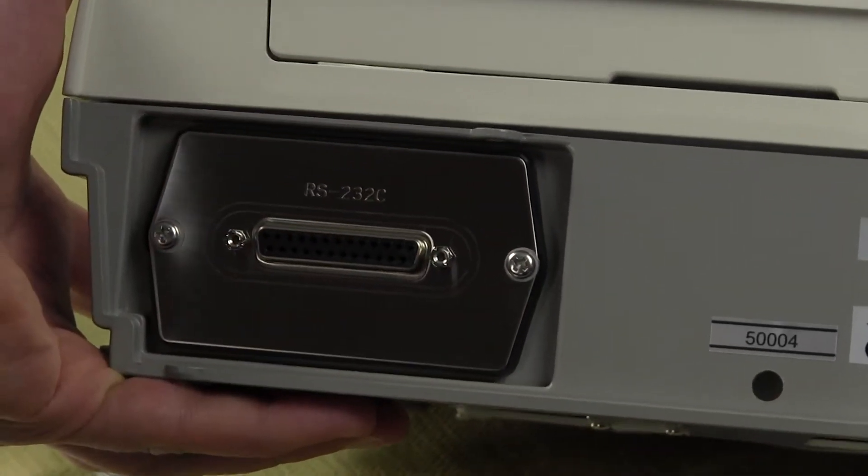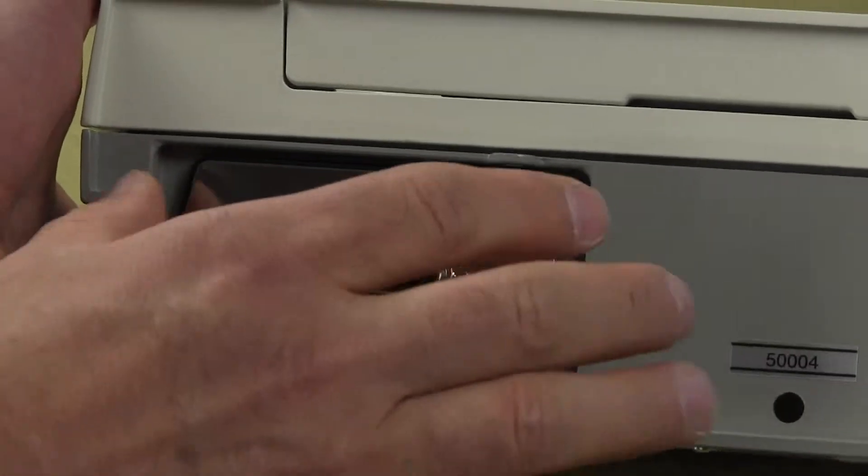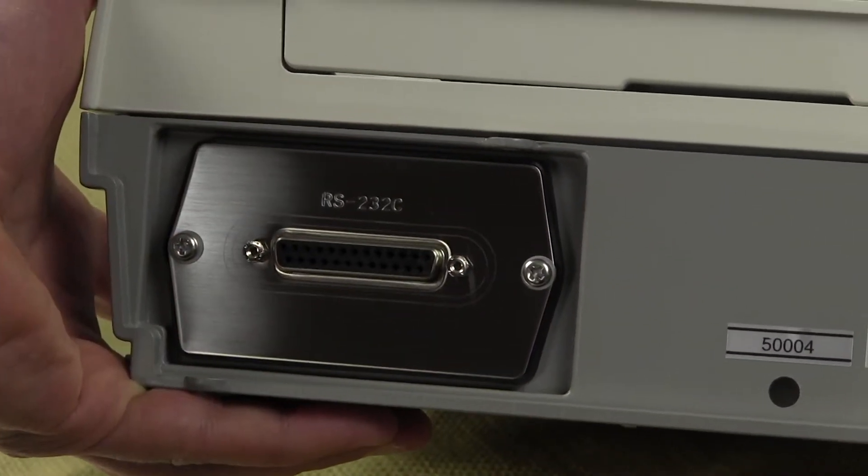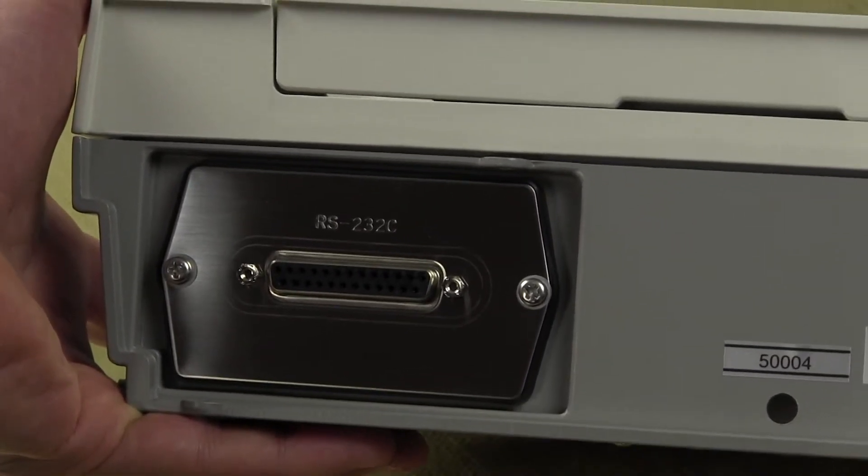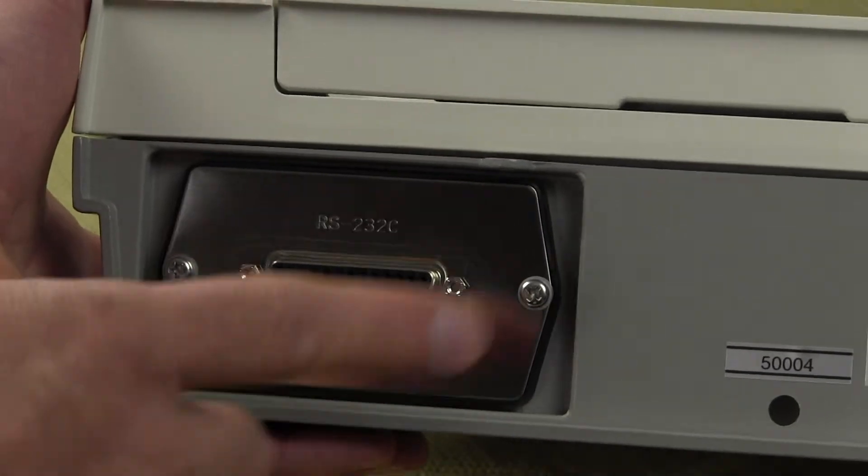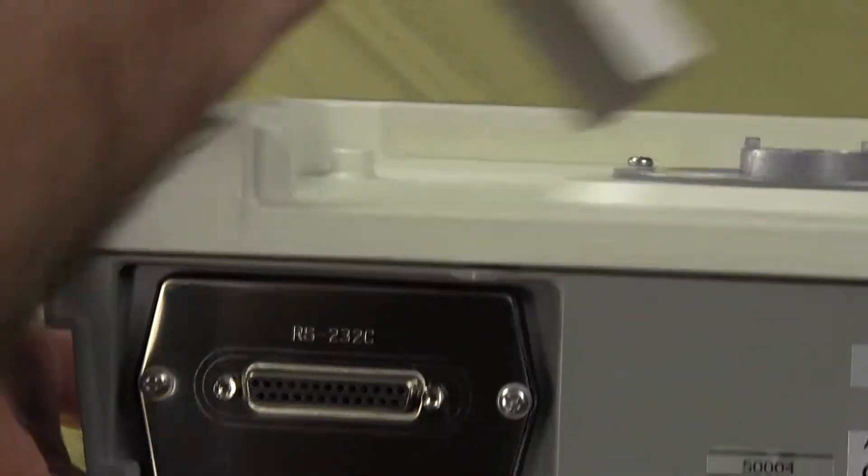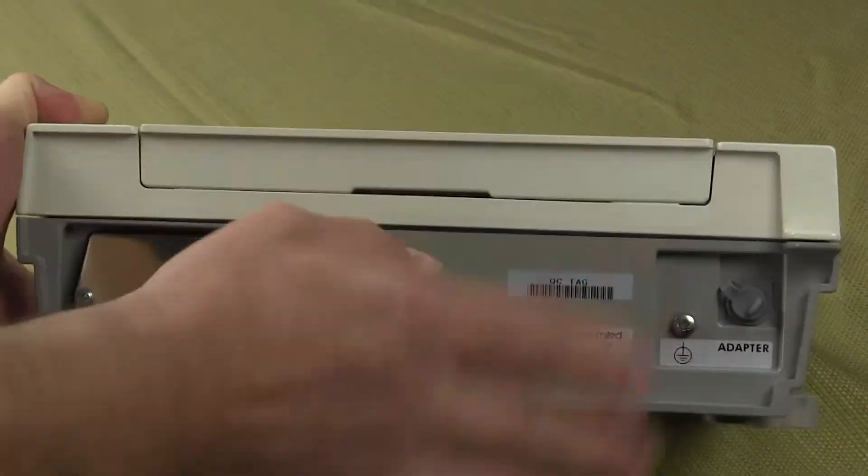There are some options. If you wanted to get a comparator output, you would remove these two screws. This module would come out and you would replace the RS-232 with A&D's GX04 or GX06 options. So that would be removed. This is the rear of the scale. You can see we can take off the back breeze here for easy cleaning.